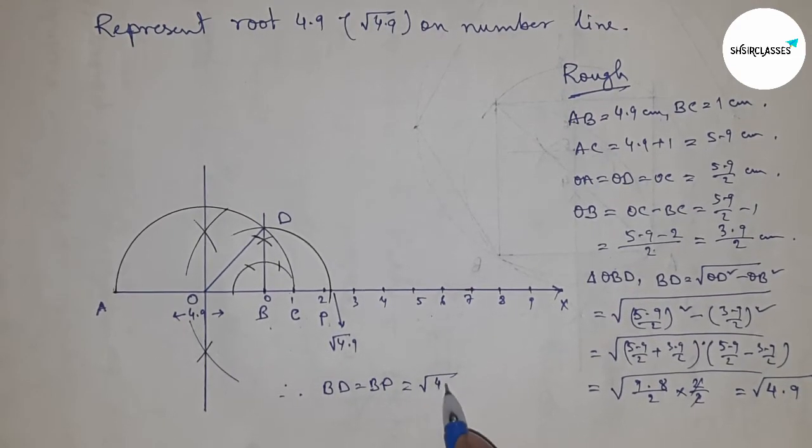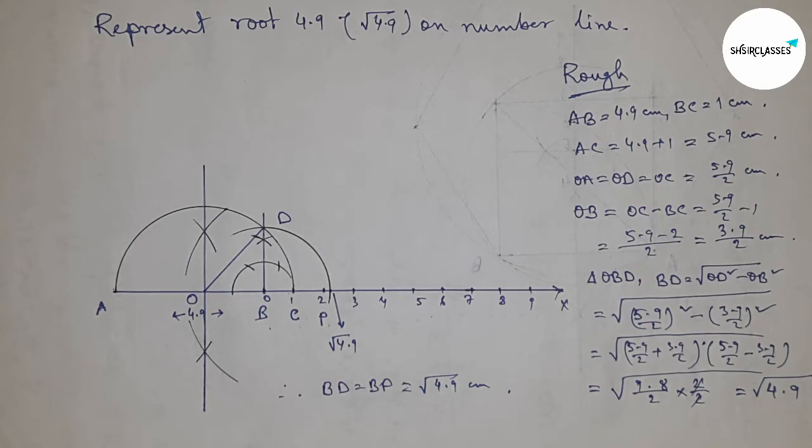Therefore BD equals BP equals root 4.9 centimeters. That's all. Thanks for watching. Please subscribe, like, and comment on my video. Thanks for watching.